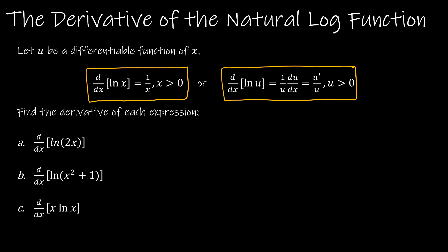For instance, if I'm finding the derivative of the natural log of 2x, that says take 1 over 2x, but then also multiply by u prime. So what's the derivative of 2x? It's 2. So instead of writing it as a product, if u is 2x, then u prime is 2, giving us 2 over 2x, which simplifies to 1 over x.